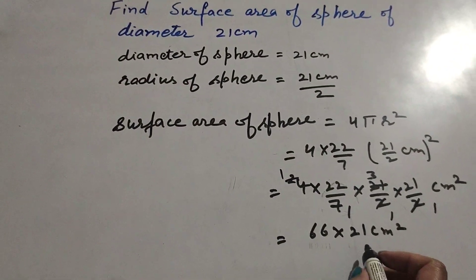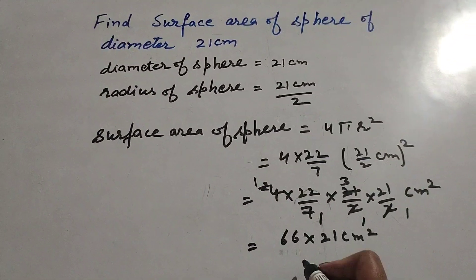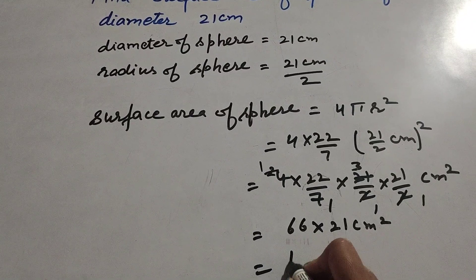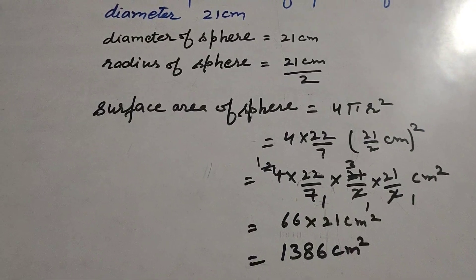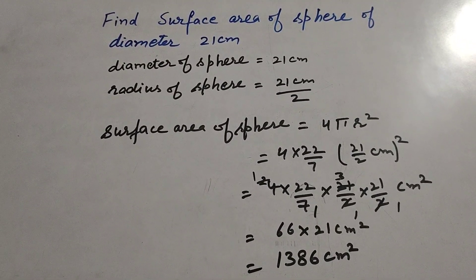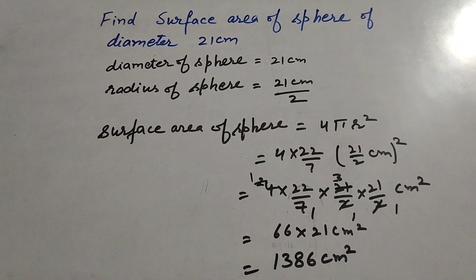66 multiplied by 21 equals 1386 centimeters squared. So the surface area of the sphere is 1386 centimeters squared.